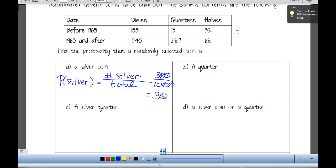What about the probability of getting a quarter? Well, all together, how many quarters do we have? All right, and so the probability of a quarter is going to be 400 over 1,000, or 0.40.